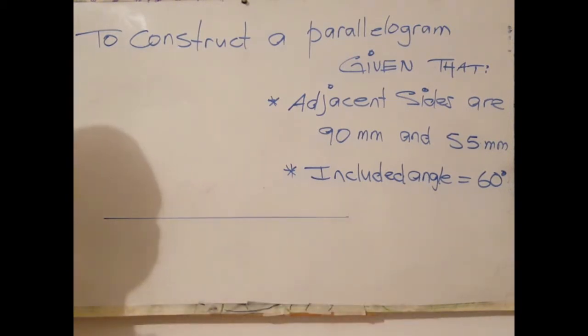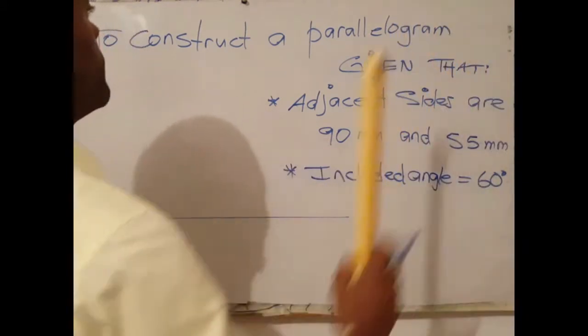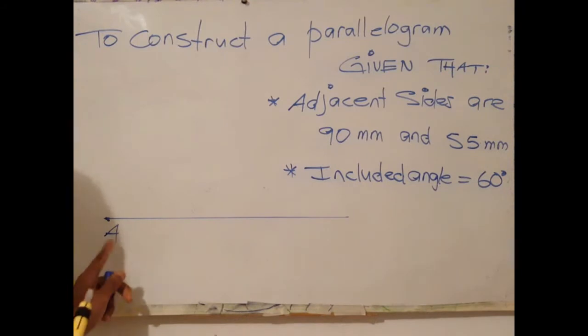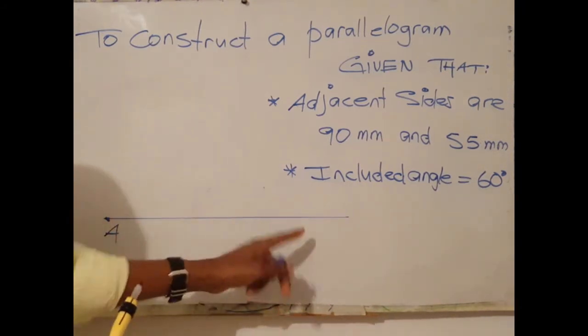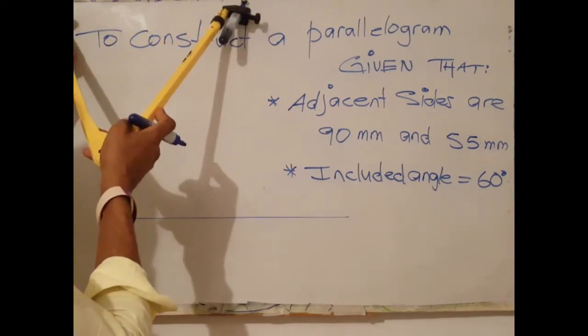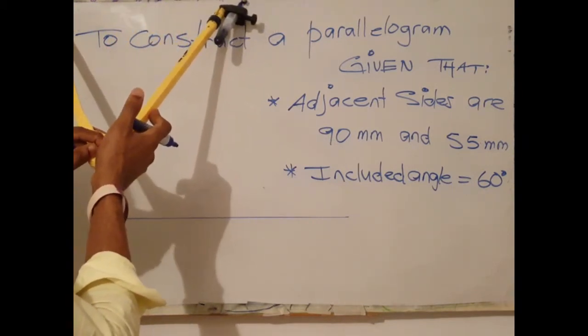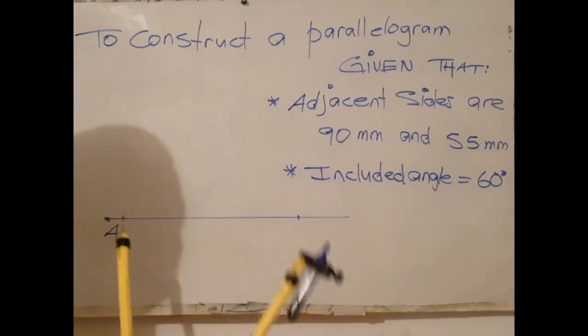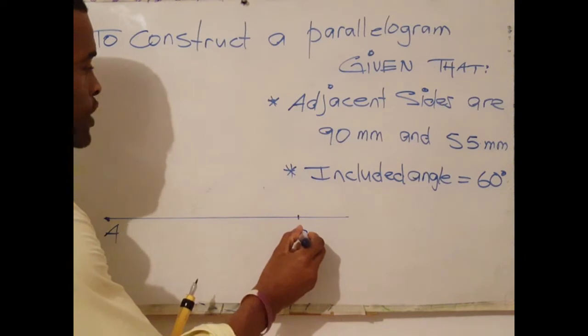The next step is to identify point A, which will be your starting point. From point A, measure 90 millimeters and label this point B.